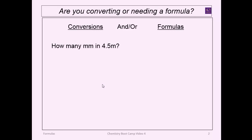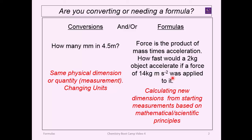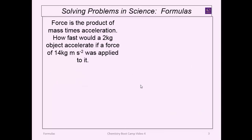When you look at a problem, you should always analyze the dimensions. If the question asks how many millimeters are in 4.5 meters, you're staying within the same dimension — that's a conversion problem. On the other hand, when switching dimensions, there has to be some scientific relationship that relates those different dimensions, and that's where we focus on formulas.